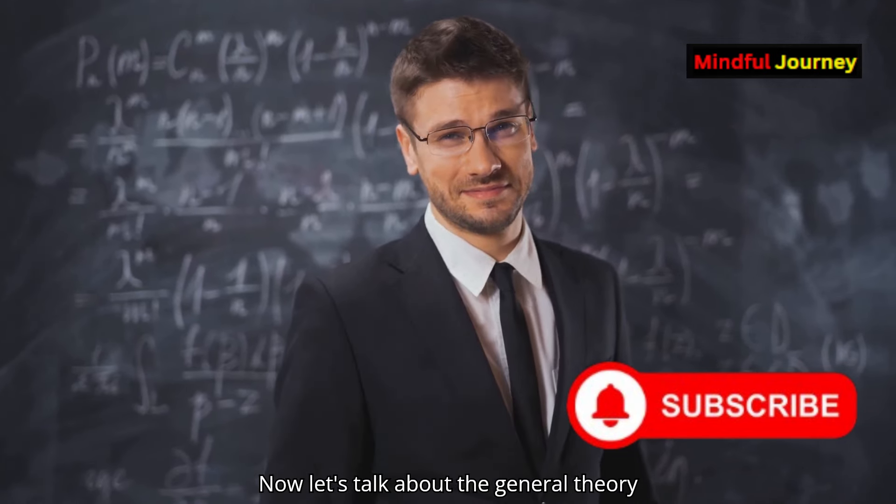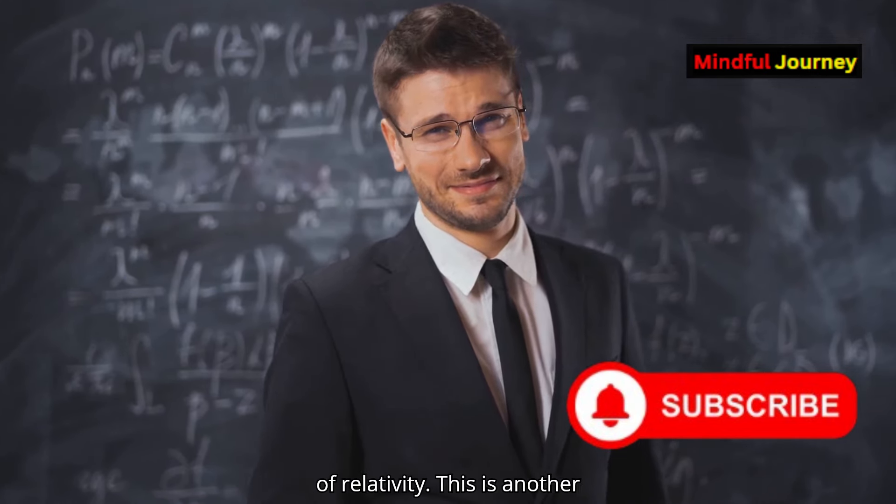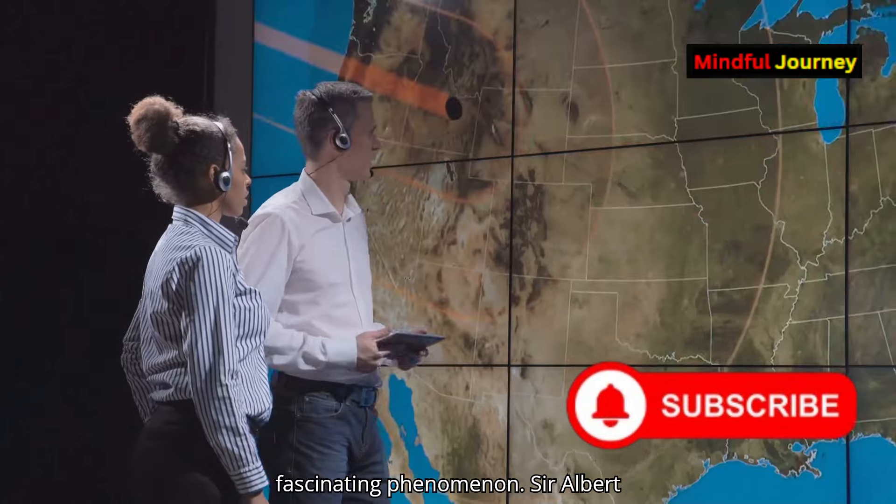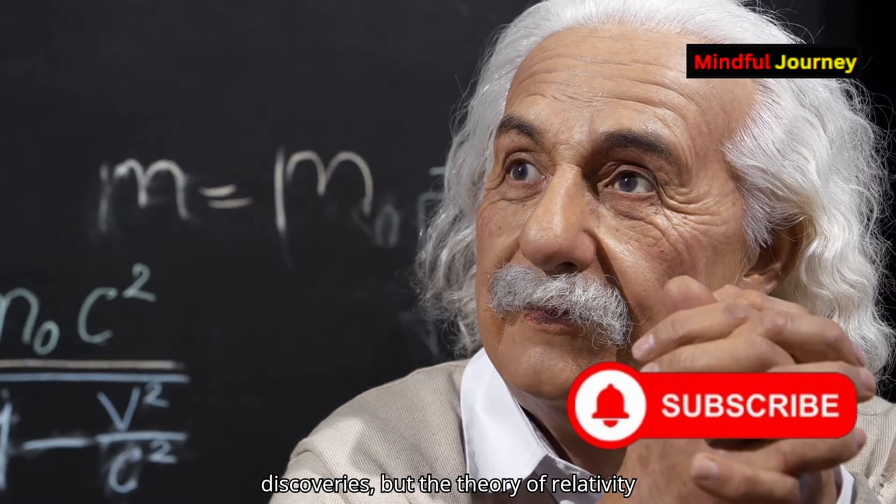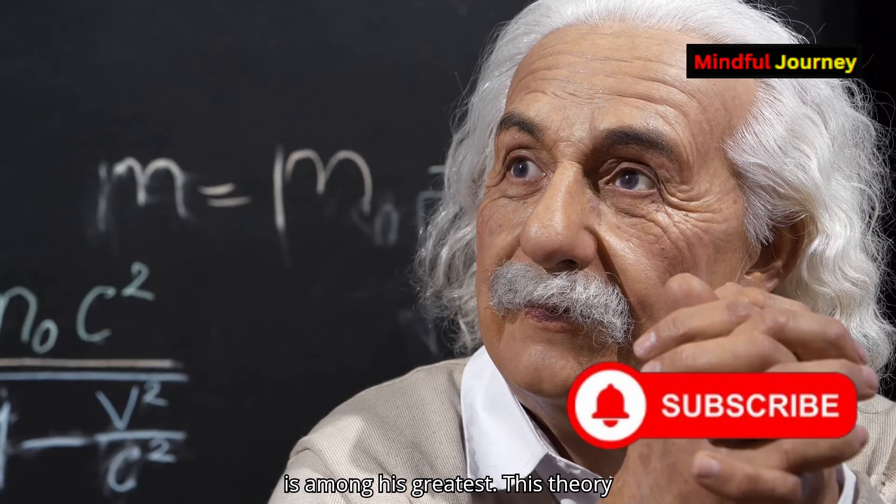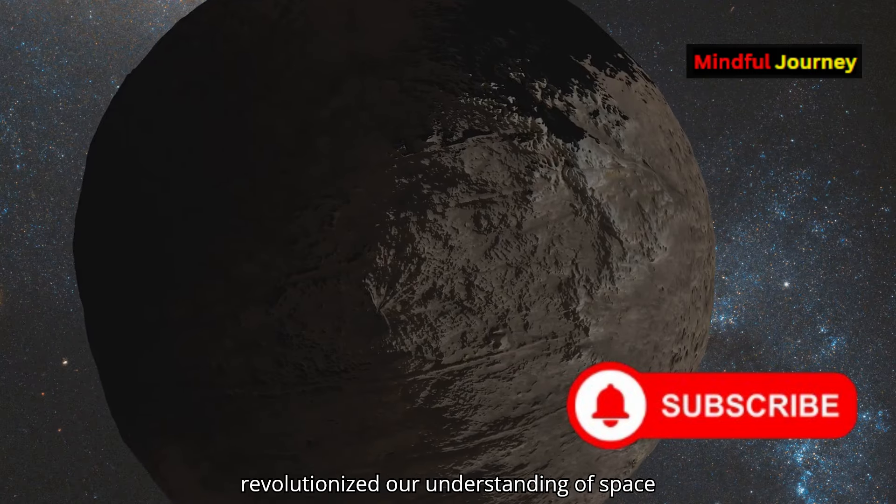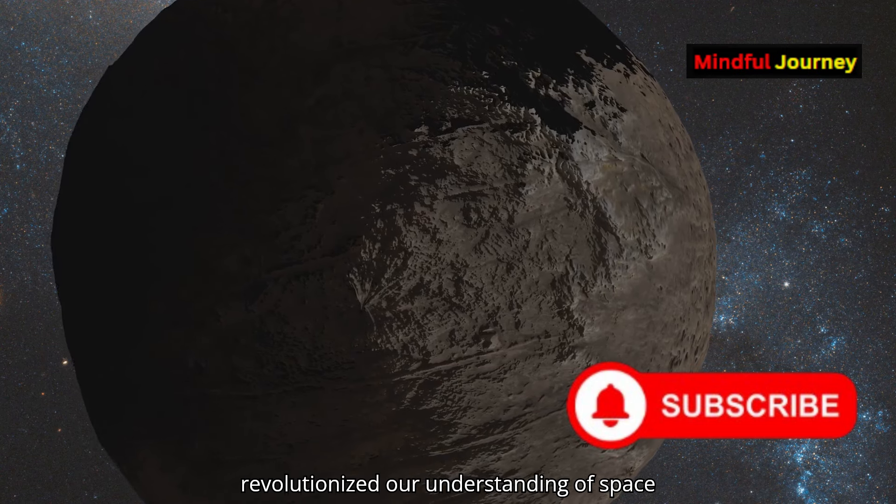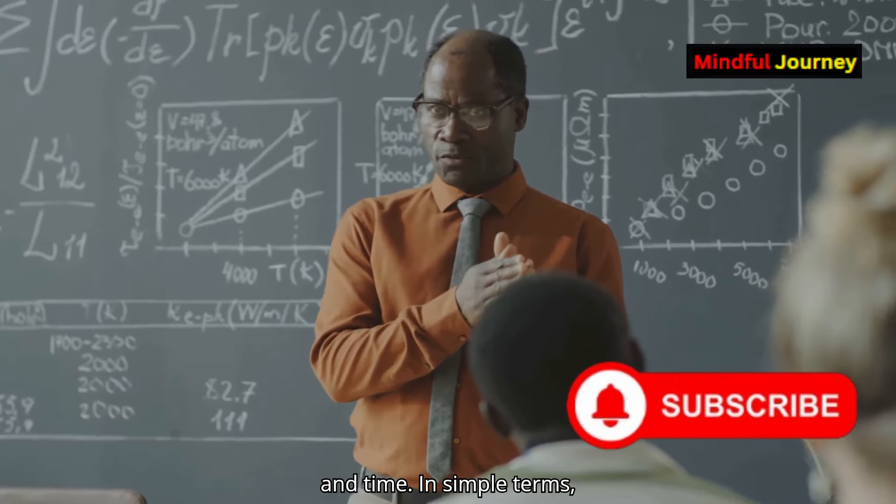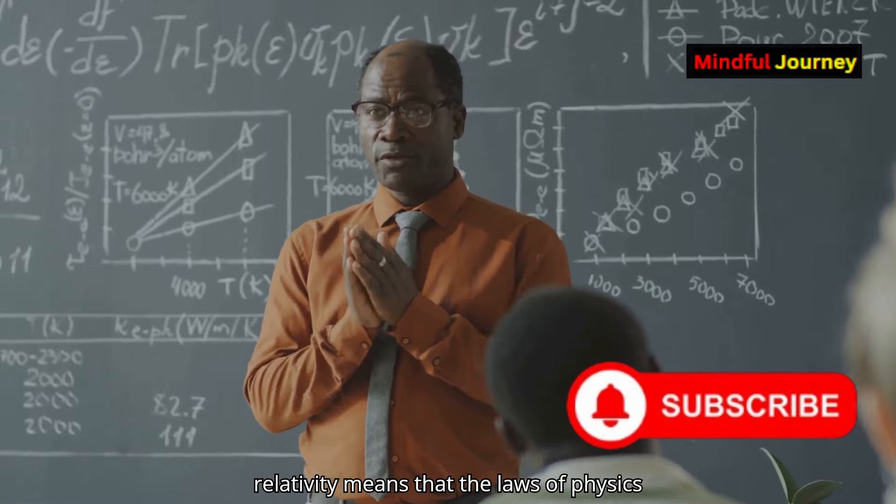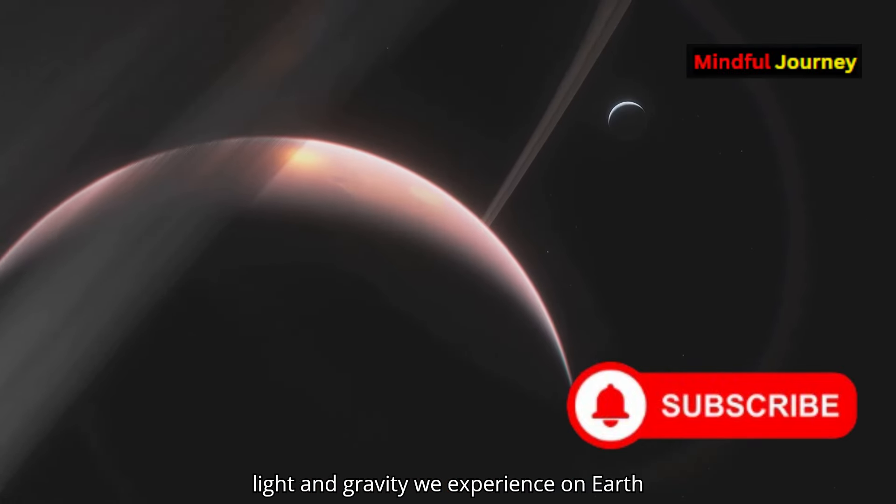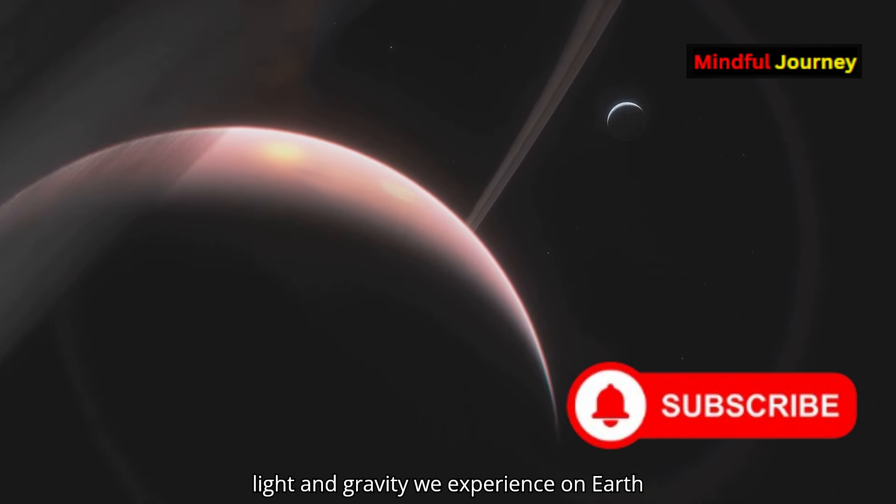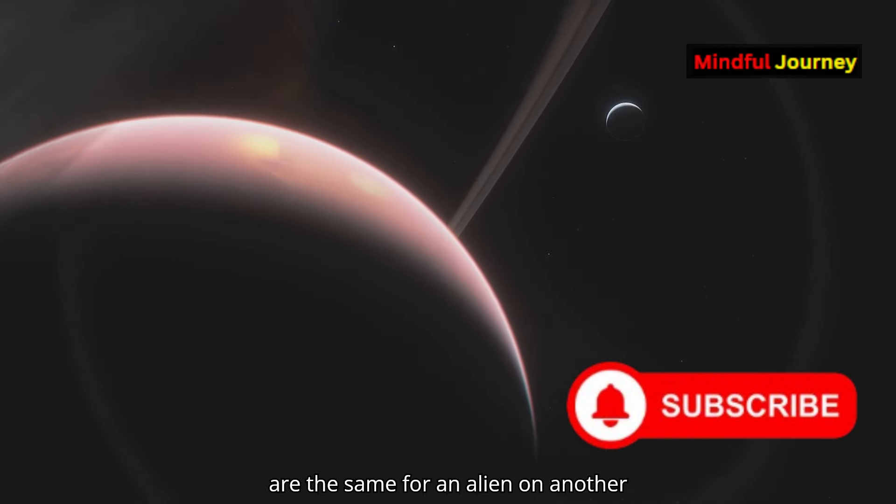Now, let's talk about the general theory of relativity. This is another fascinating phenomenon. Sir Albert Einstein is renowned for many discoveries, but the theory of relativity is among his greatest. This theory revolutionized our understanding of space and time. In simple terms, relativity means that the laws of physics are the same everywhere. The laws of light and gravity we experience on Earth are the same for an alien on another planet.